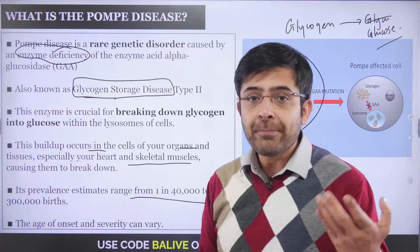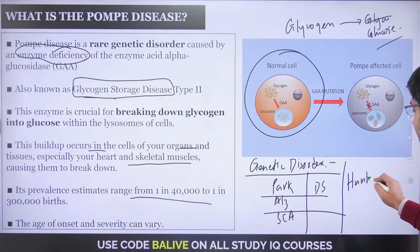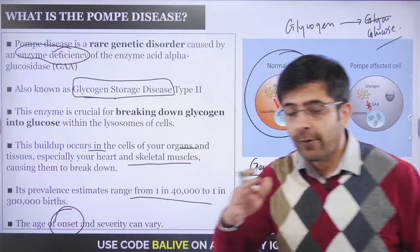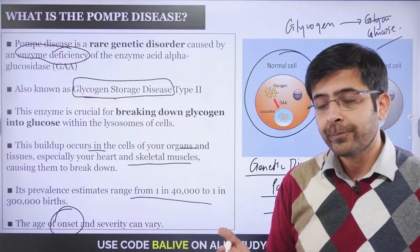Similar to Huntington's disease, where onset can be very late — almost into adulthood — Pompe disease also has two types of onset: infantile onset and late onset. Let's understand each of them individually.